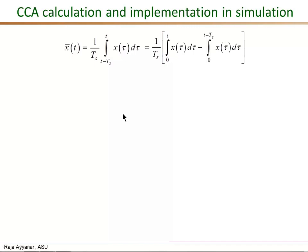Next, let's briefly discuss how we can actually implement or calculate CCA of different quantities in simulation. We use the basic definition of the CCA x bar of t given by this integral divided by Ts, and the integral from t minus Ts to t can be written as two components.